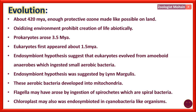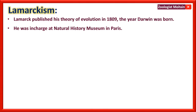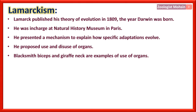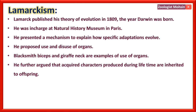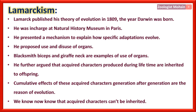Lamarck published his theory of evolution in 1809, the year Darwin was born. He was in charge at the Natural History Museum in Paris. He presented a mechanism to explain how specific adaptations evolve, proposing use and disuse of organs — the blacksmith's biceps and the giraffe's neck are examples. He further argued that acquired characters produced during a lifetime are inherited by offspring, and that cumulative effects of acquired characters over generations drive evolution. We now know that acquired characters cannot be inherited.